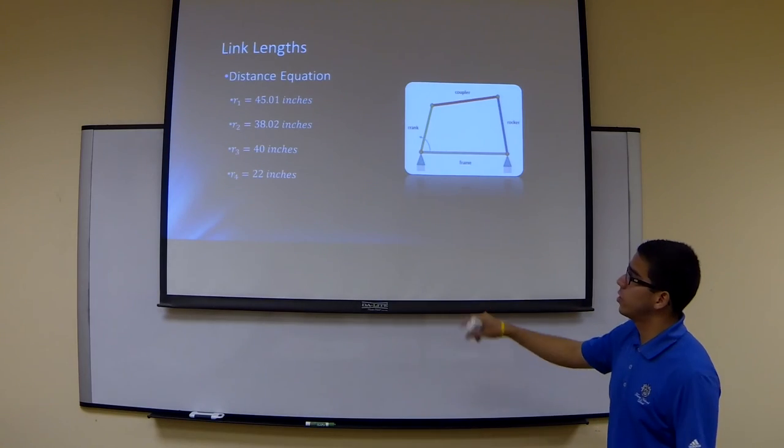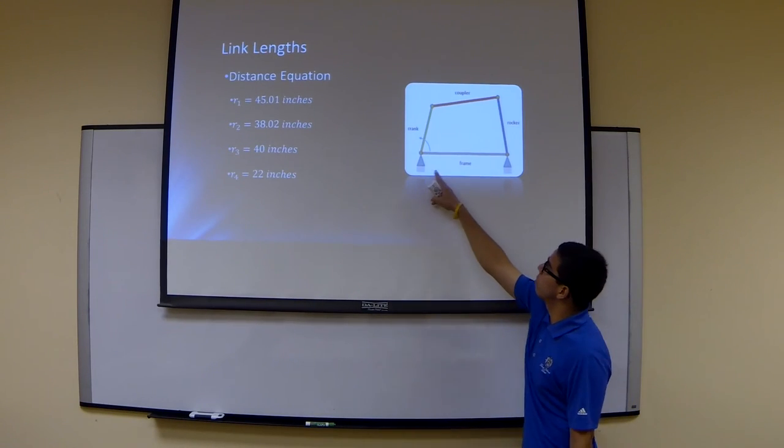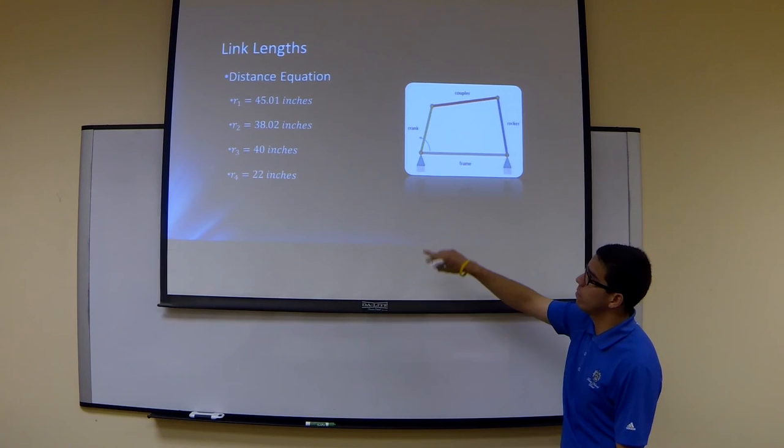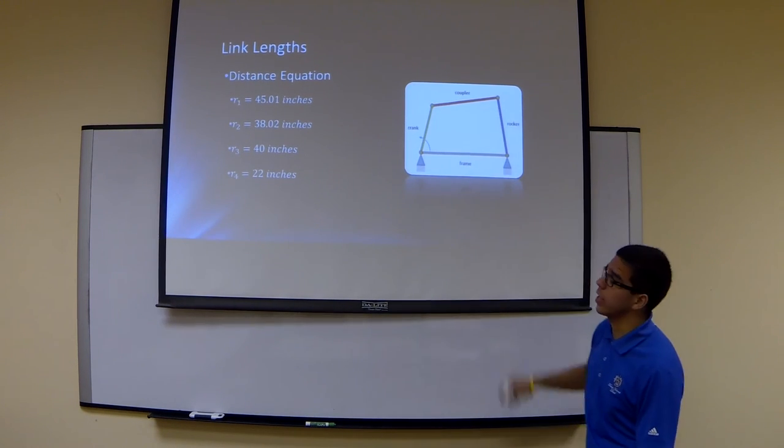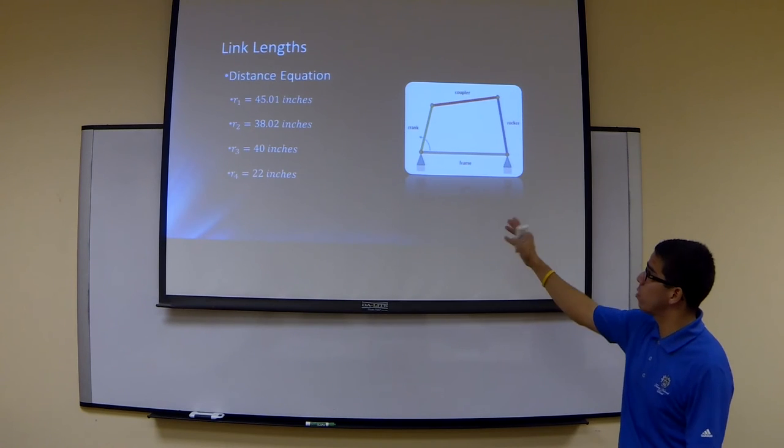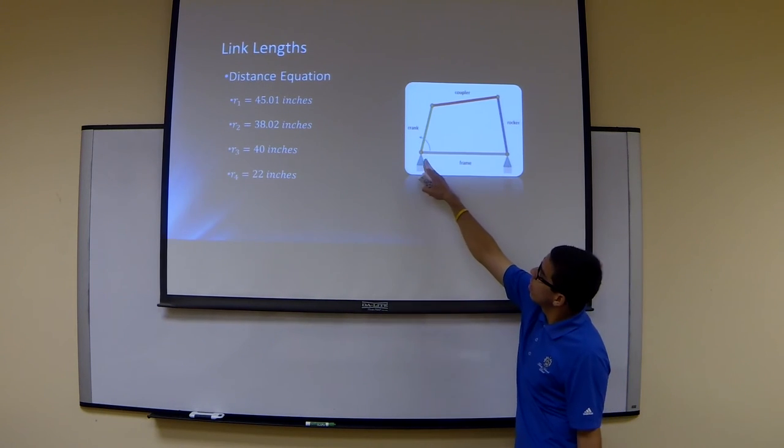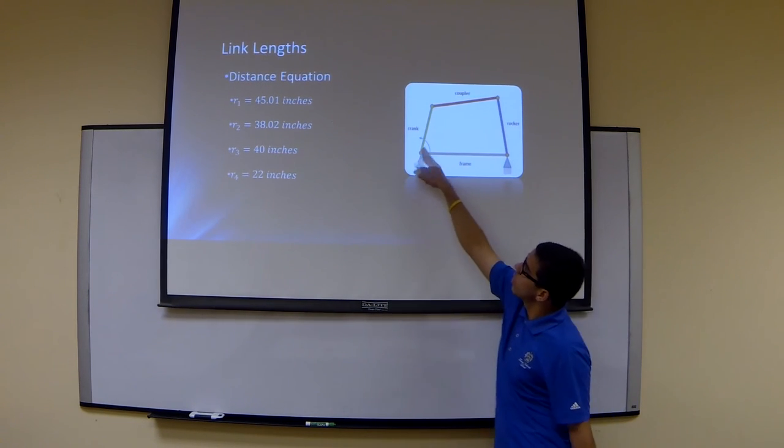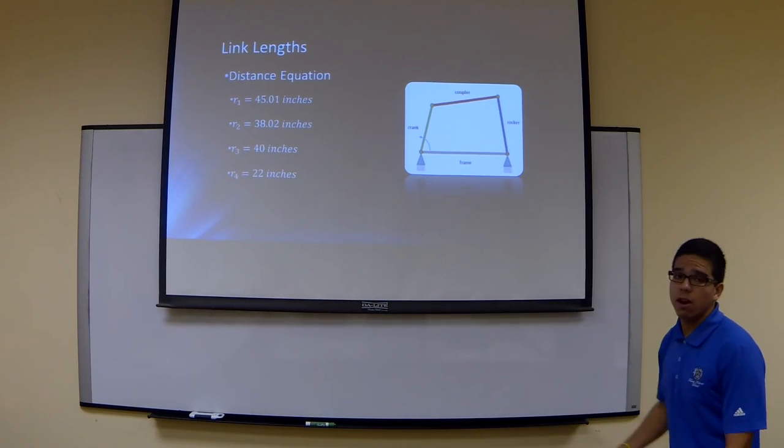So once your pole positions are solved for, which would be these points right here on the 4-bar mechanism, you have to find each length of your link. So basically you would use the distance equation in order to see how far this point is from this point, this point is from this point, etc. And you'd find all the link lengths.